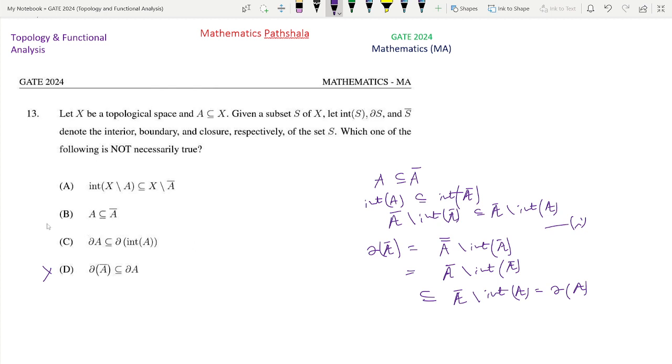Now look at option B. This is the definition of A bar. We also use here. This is also correct statement. So this is not the correct option.